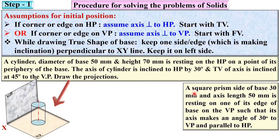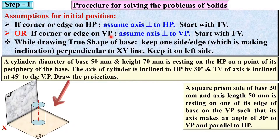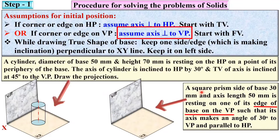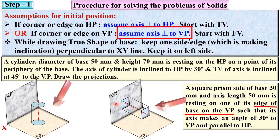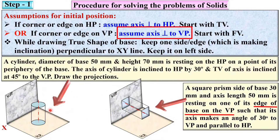Consider another example: a square prism with a base side of 30 mm and axis length 50 mm, resting on one of its edges of the base on the VP. Since the edge of the base is on the VP, you assume the axis is perpendicular to VP in the first stage. So the axis of the square prism is perpendicular to VP in the first stage. Both examples demonstrate stage one clearly.